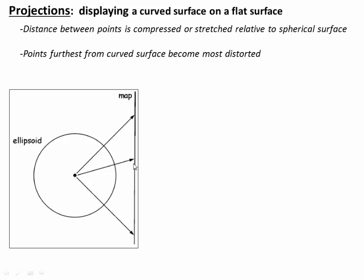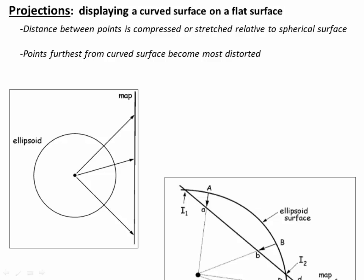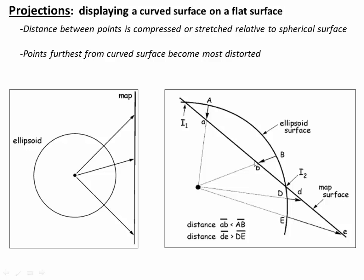Depending on where the plane is relative to the sphere, the linear distances between points will not be preserved in the projection. For example, if we've got four points on the sphere — A, B, D, and E — points B and D end up projected further apart than they are in reality, whereas points A and B end up projected closer together than in reality. So distances and areas are not preserved during projection onto a flat surface.